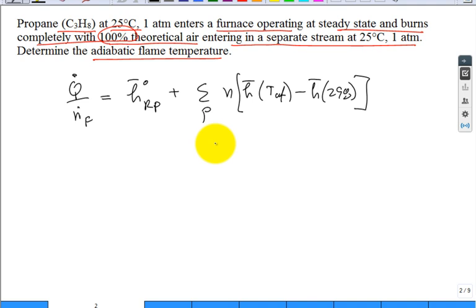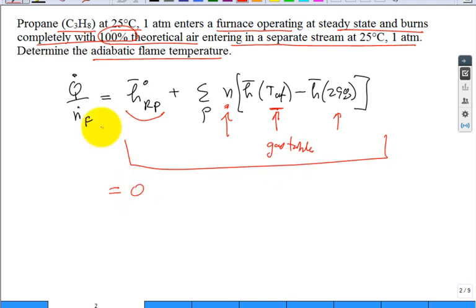So what you do is you say, how do I do this? Well, if I knew what the adiabatic flame temperature is, I could go to the gas tables, the ideal gas tables, look up those molar enthalpies, take the difference with the molar enthalpy at 298, have the stoichiometric coefficient in my balanced reaction equation, and I would calculate this only once based on the enthalpies of formation, and then I would work such that this whole right-hand side equals to zero, then it's adiabatic.